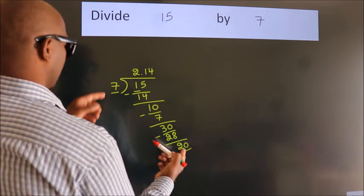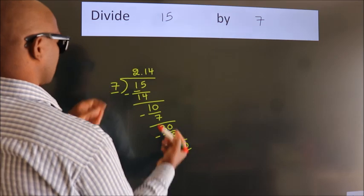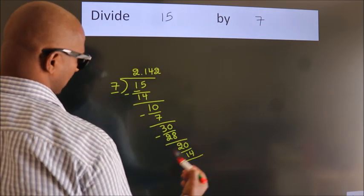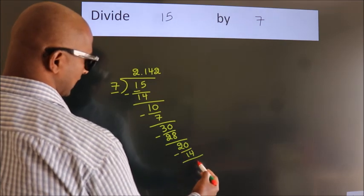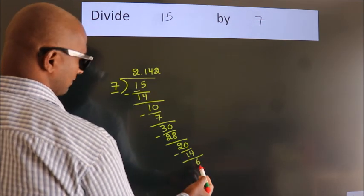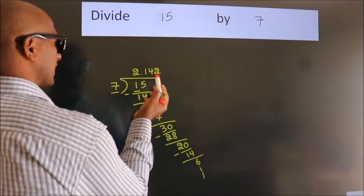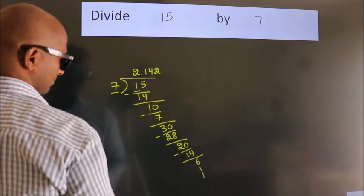A number close to 20 in the seven table is seven twos, 14. Now we subtract, we get six, and the division continues. It is enough if we do up to three decimal places.